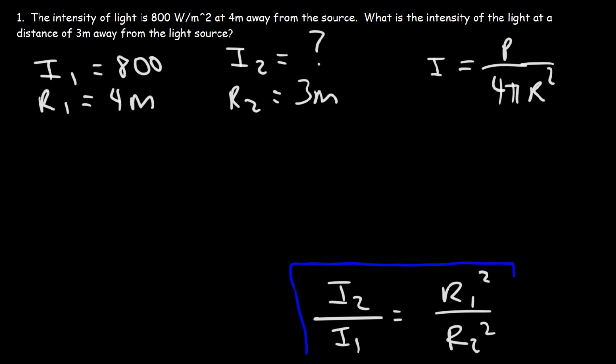This right here is the formula that we need to get the answer. So let's go ahead and plug in everything that we know. We're looking for I₂. I₁ is 800. r₁ is 4. Don't forget to square it. r₂ is 3.